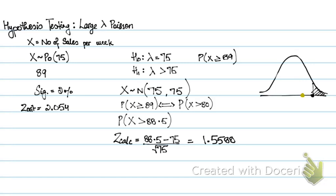So this is how you carry out a hypothesis test for a large lambda Poisson. If your lambda is greater than 30, you can easily approximate it to a normal distribution. In the normal distribution, the mean and the variance will be the same as lambda. And you will do continuity correction because you're moving from a discrete